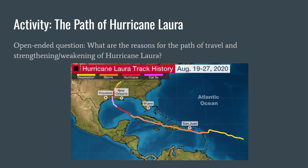Here is an activity to test your weather knowledge — an open-ended question. What are the reasons for the path of travel and the strengthening and weakening of Hurricane Laura, which happened in August 2020? You can pause this video and write down some notes, and then I'll reveal some points in the next slide.